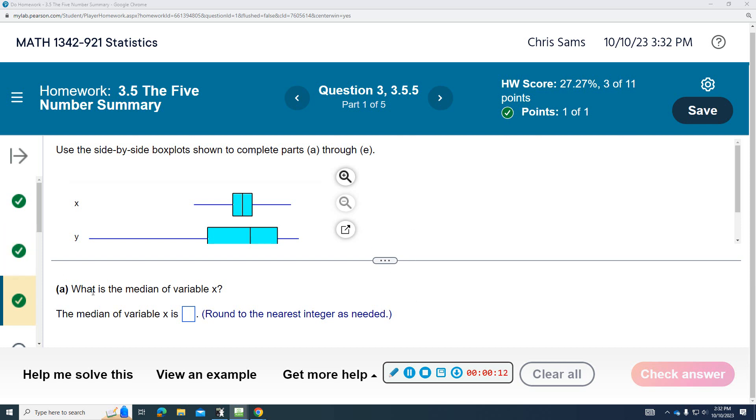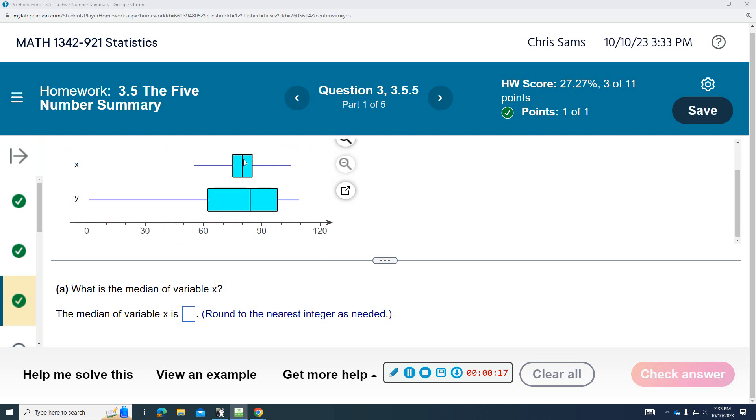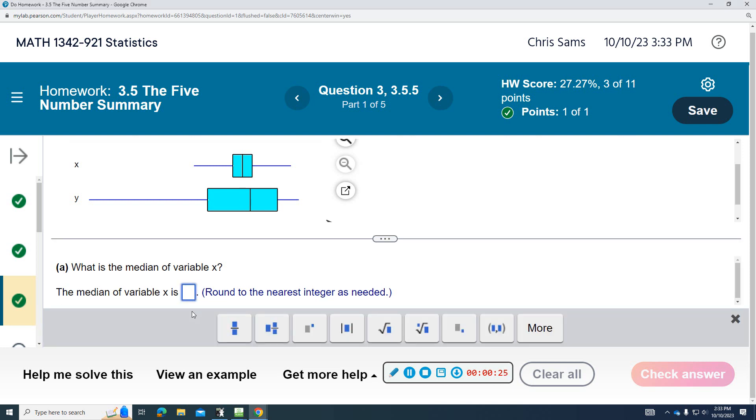So we want to know what is the median of variable X. The median would be the middle. I have to scroll down a little bit. So the middle looks like it comes, they count about 10, 60, 70, 80 to around about 80. So that's going to be the median.